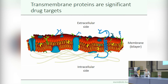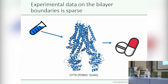They move ions or other molecules through the membrane. They are commonly associated with various human diseases. Therefore, they are significant drug targets. To develop new therapies targeting them, we need to understand how they work. For this, structure determination of transmembrane proteins is important.